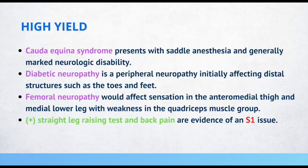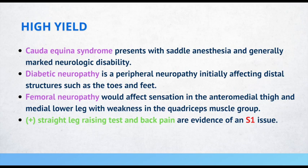Cauda equina syndrome presents with saddle anesthesia and generally marked neurologic disability. Diabetic neuropathy is a peripheral neuropathy initially affecting distal structures such as the toes and feet. Femoral neuropathy affects sensation in the anterior medial thigh and medial lower leg with weakness in the quadriceps muscle group. A positive straight leg raising test with back pain is evidence of an S1 issue.